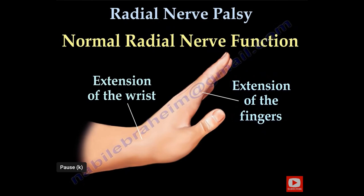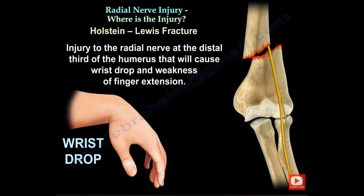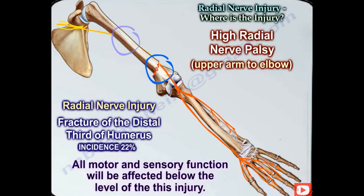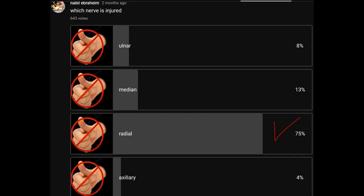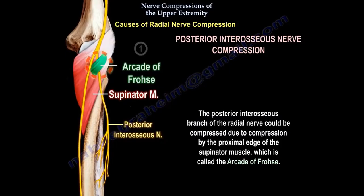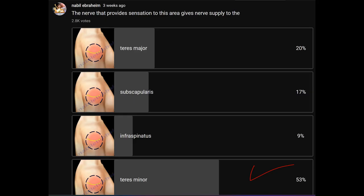What is the radial nerve function? It will be extension of the wrist and extension of the fingers. Holstein-Lewis fracture is a fracture of the distal third of the humerus with associated radial nerve injury; the incidence of radial nerve injury in this fracture is about 22 percent. In addition to wrist drop, the patient will be unable to perform the hitchhike sign. The injury may involve the radial nerve or the posterior interosseous nerve, which can also be compressed at the Arcade of Frohse — the proximal edge of the supinator muscle.